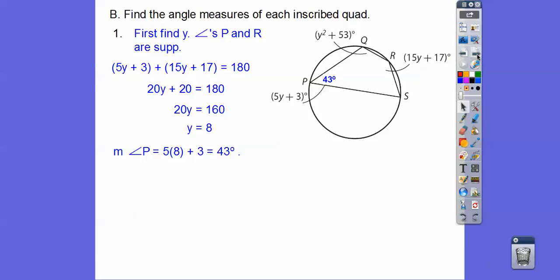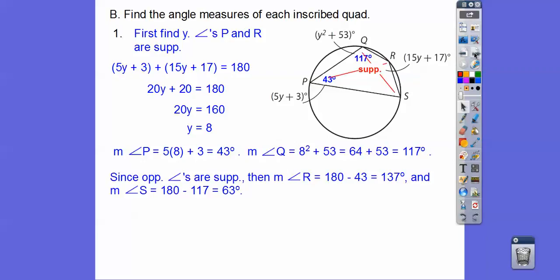Angle P, when we plug in 8 right there, is 43 degrees. Let's go ahead and plug in 8 right here. So we get 117. And so the other angles are their supplements right there. 43 and 137 gives us 180 right here. And then this one was 117. So 117 plus 63 also gives us 180 right there.